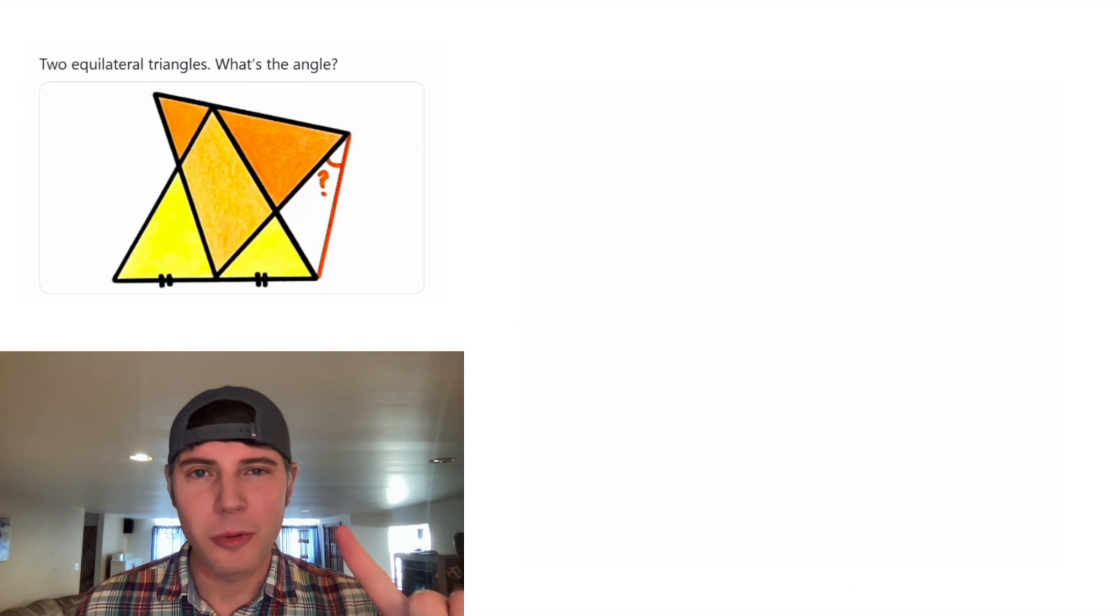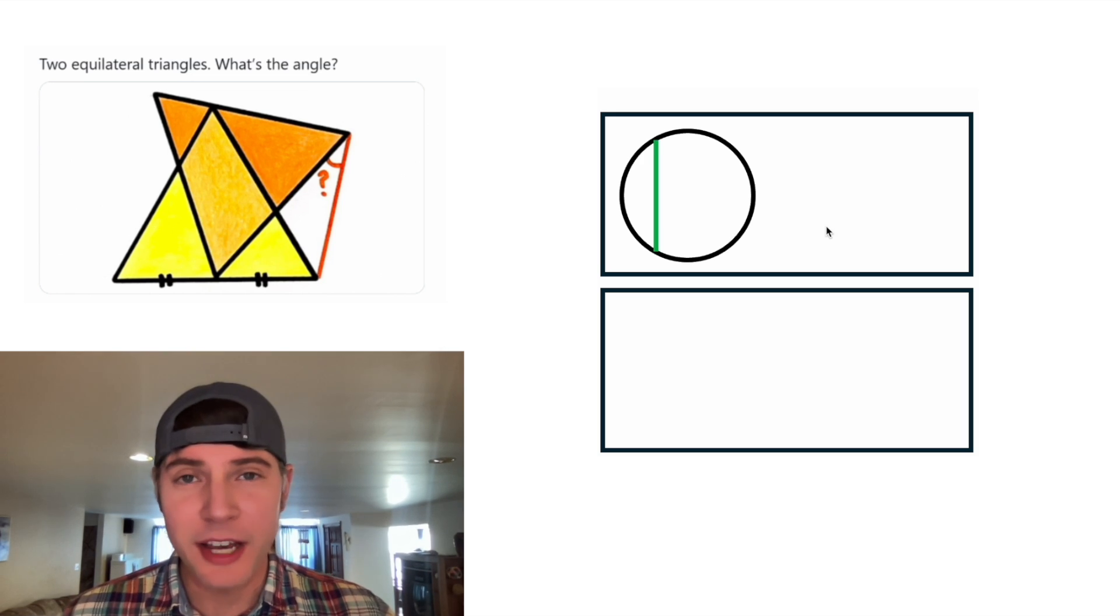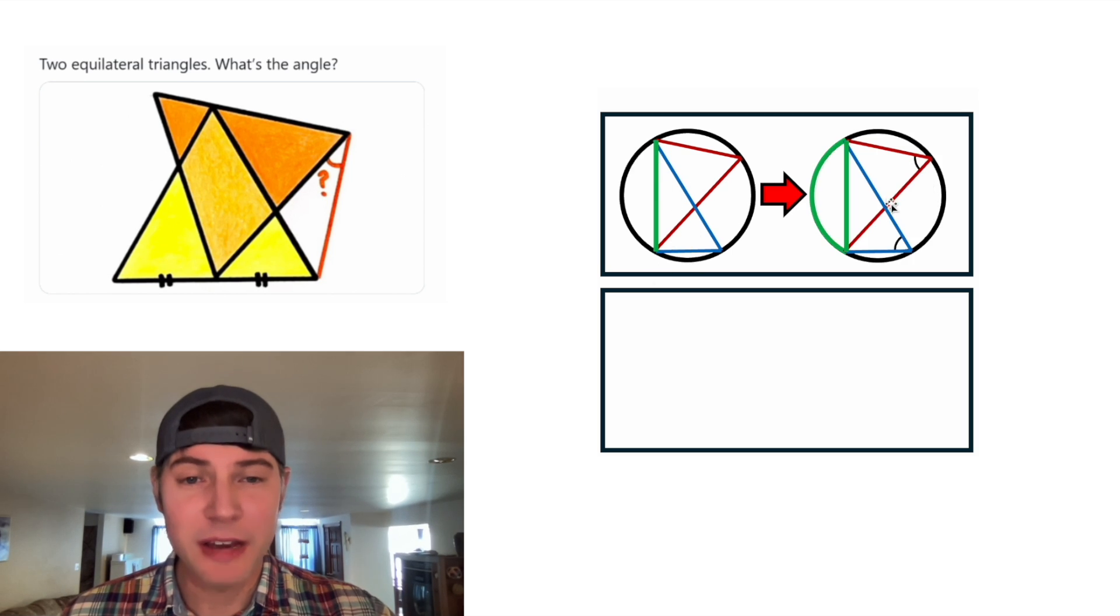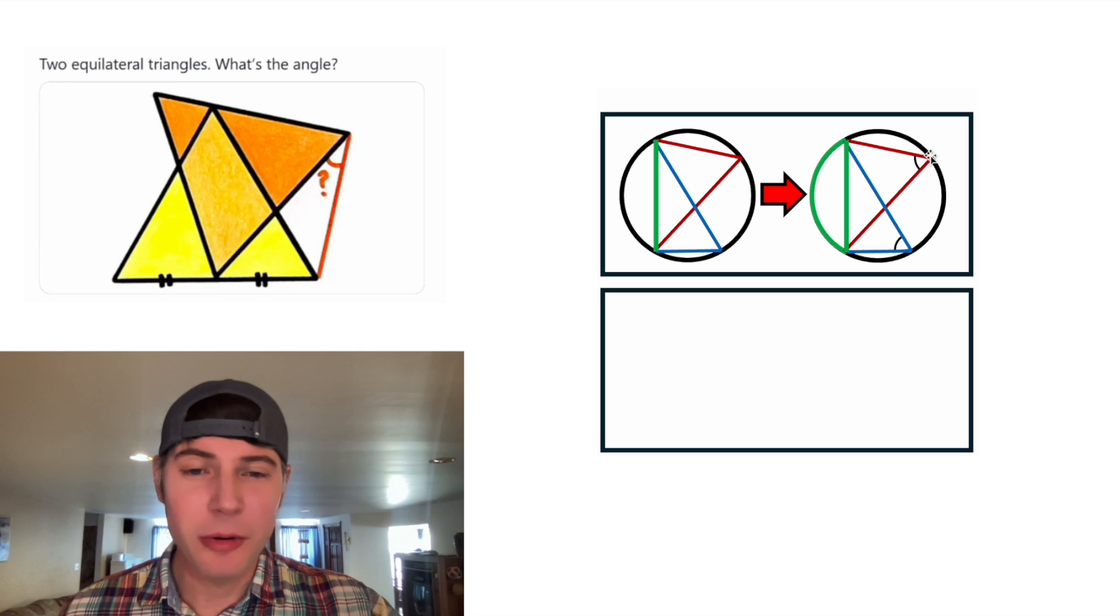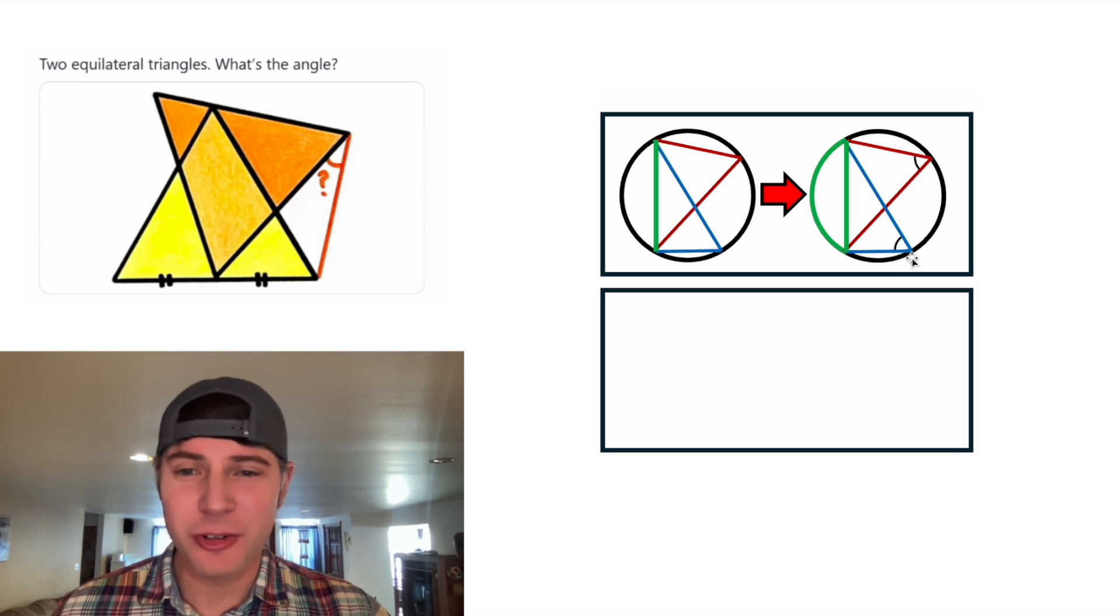To solve this, I'm going to use some of the inscribed angle theorems. The first one says if you have a circle and a chord on that circle, you have two angles that both subtend that chord. Those two angles will have the same measure, they'll be congruent with each other. And this is always true no matter where the angle is on the circle. And the converse is also true. If you have two congruent angles that subtend the same segment, they are two inscribed angles in the same circle.